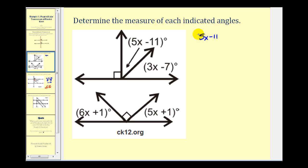So 5x minus 11 plus 3x minus 7 has to be equal to 90. Let's go ahead and solve this equation for x, and then we can come back and determine the measure of each of these angles. Let's combine like terms. So we'd have 8x minus 18 equals 90. We'll add 18 to both sides. So we have 8x equals 108. Divide both sides by 8. So we get 13 and a half, or 13.5.